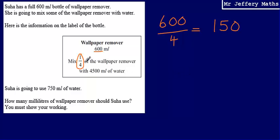So we're mixing 150 milliliters of the wallpaper remover with 4,500 milliliters of water. That is the ratio in which I need to mix these together. And then it tells us here that Sewer is going to use 750 milliliters of water.